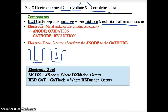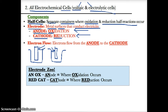In each half cell, you have what's called an electrode — represented by rectangular shapes. Electrodes are metal surfaces that conduct electricity. You have two different types: the anode, where oxidation occurs, and the cathode, where reduction occurs.